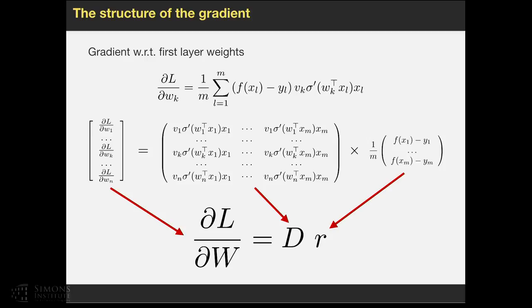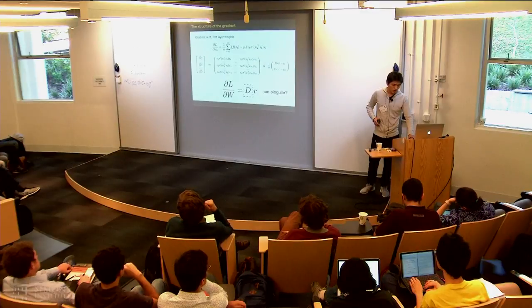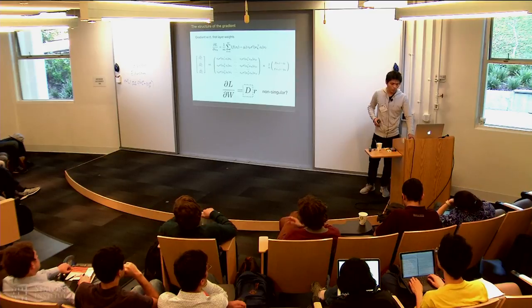For simpler notation, this concatenated long gradient vector equals the special matrix we call D times the residual vector. At a stationary point, the gradient will be zero. And if the D matrix is non-singular, then immediately this R vector will be zero, which means it is a global optimum. In this talk, I'm going to give some conditions under which this D will be non-singular.